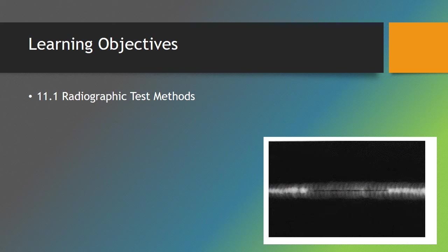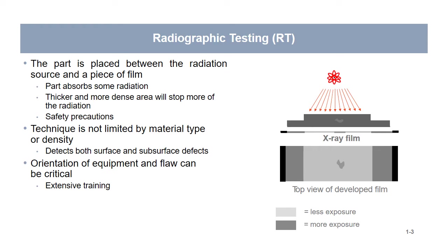Section 11.1 covers radiographic test methods. The part to be x-rayed — in this instance, pipe — is placed between a radiation source and a piece of film. The part absorbs some radiation. Thicker and more dense areas will stop more radiation and show up on the film. A tungsten inclusion will absorb more radiation and turn out light, while a void or slag that is less dense than the steel will show up as a dark spot because it absorbed less radiation.